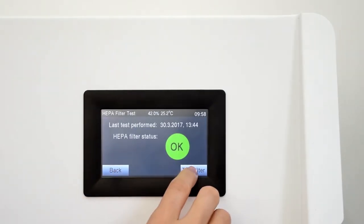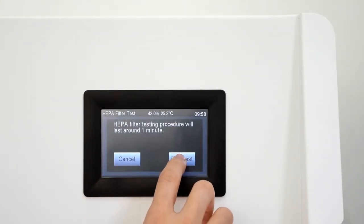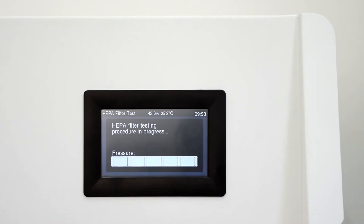The most important function is the HEPA filter test. This test will measure the airflow pressure of the filter and show the result. If the results are good, it means that the filter has no damage and it will maintain the constant airflow inside the working area.